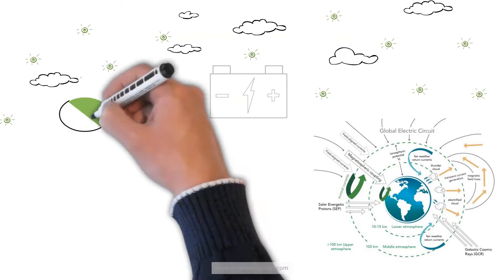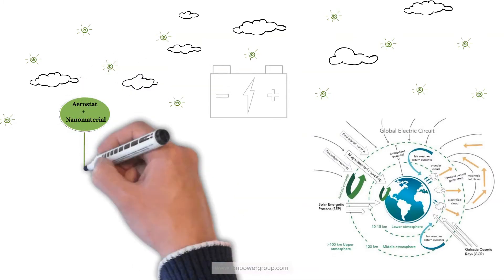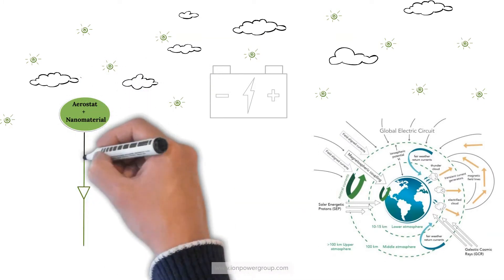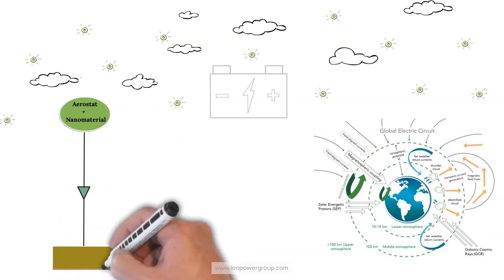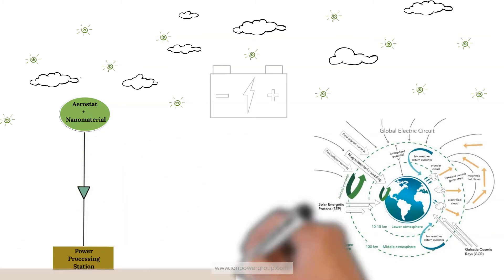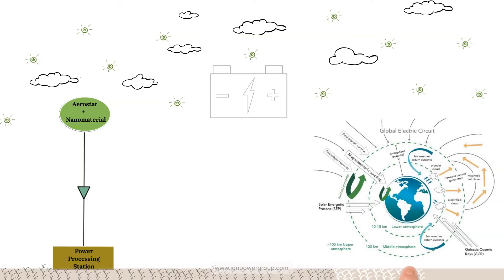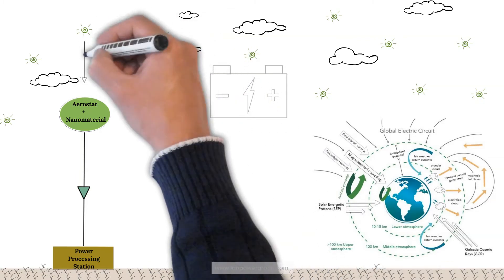Ion Power Group discovered that patented nanomaterial is effective at harvesting electricity day and night from the atmospheric ions in all weather from the Sun-powered global electric circuit.